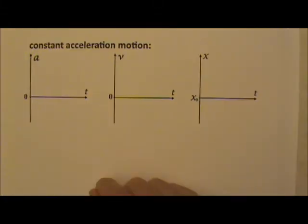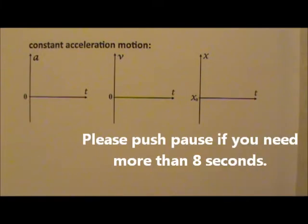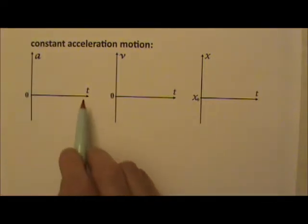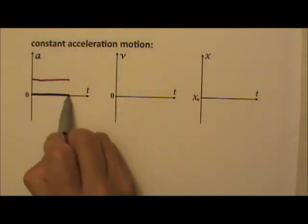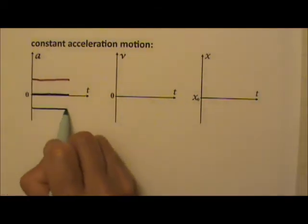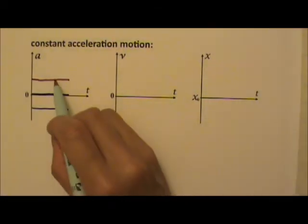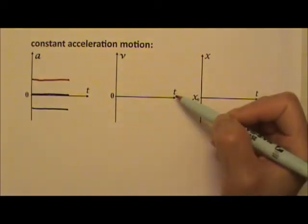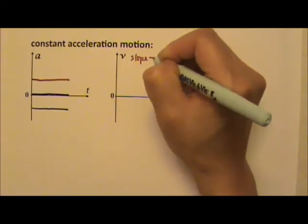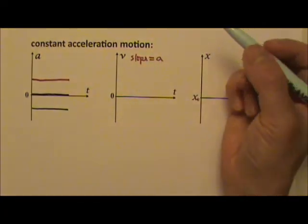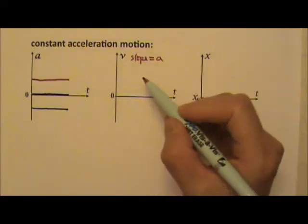The next kind of motion is constant acceleration motion. For constant acceleration, your acceleration can be a positive constant, a zero constant, or a negative constant. If your acceleration is a positive constant, your velocity versus time graph would have a positive slope, because the slope of the velocity versus time graph is the acceleration. Positive constant acceleration means positive constant slope.